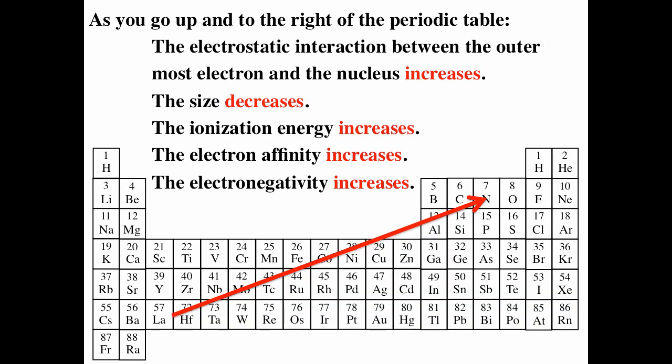As you go up to the right on the periodic table, the electrostatic attraction between the outer electrons and nucleus increases. The size of the atoms decreases, ionization energy increases, electron affinity increases, and electronegativity increases. The elements on the lower left have smaller ionization energies, so it's easier to remove their electrons. The elements on the top right have more positive electron affinity, so more energy is released when they gain electrons. This is consistent with metals being lower left and non-metals being top right.